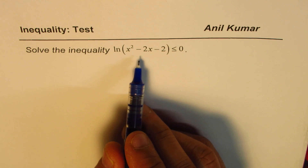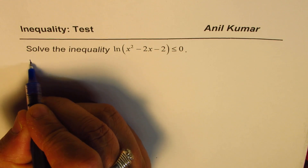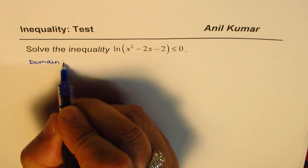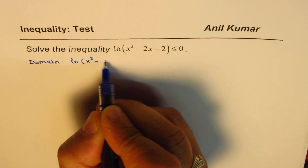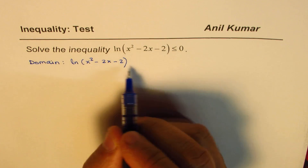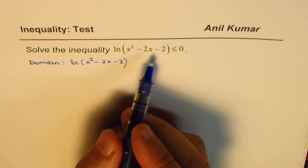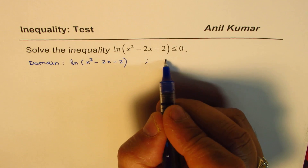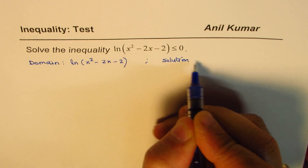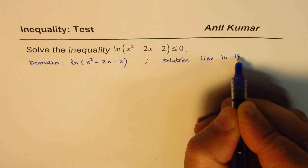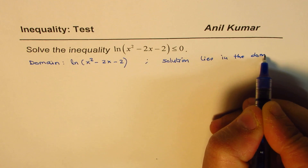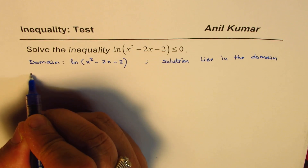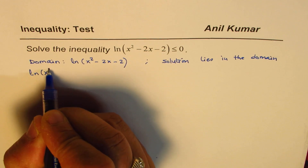we need to consider two things. First is the domain of the function itself. So we need to consider the domain of ln(x² - 2x - 2). The solution should be within the domain of this function — that is important. The second part is, of course, the solution lies in the domain. So let's begin by finding the domain of this function.